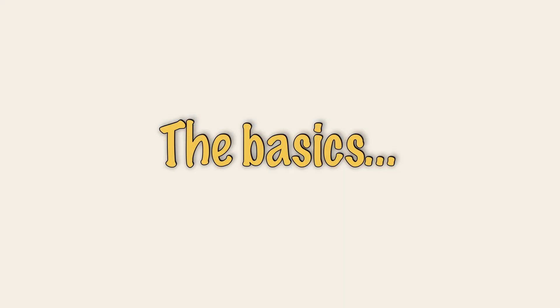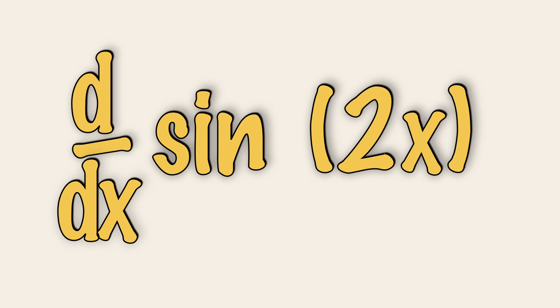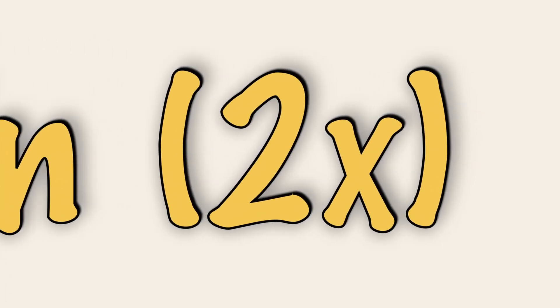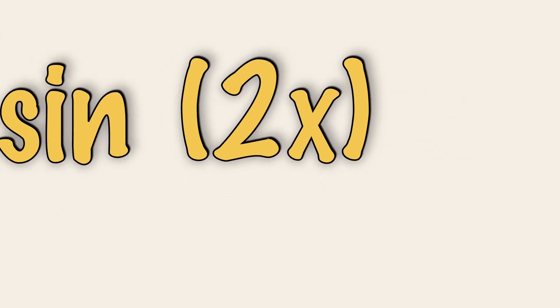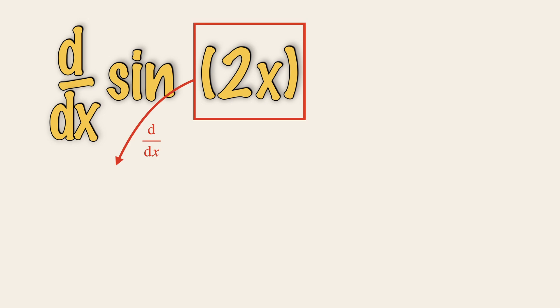Now, we are going to find the derivative of sine 2x, meaning to differentiate this with respect to x. Firstly, we are going to zoom right in to the angle. Just look at the angle. Differentiate this angle with respect to x, which gives us a value of 2. Place this value of 2 on the first part of the statement.